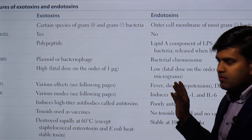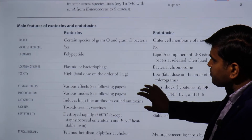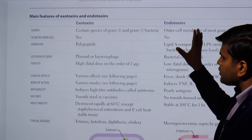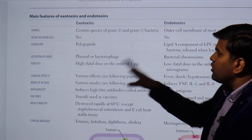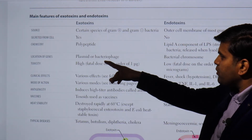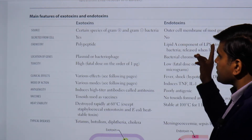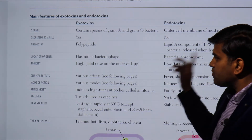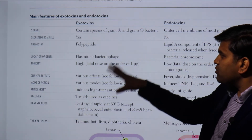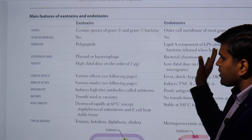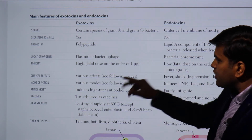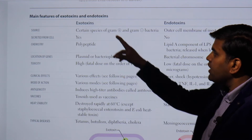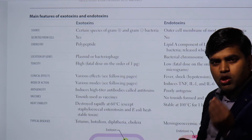Chemically, exotoxin is a protein whereas endotoxin is a lipopolysaccharide — the lipid A being the toxic component — along with carbohydrates and polysaccharide. The gene location for exotoxin is on a plasmid, whereas for endotoxin it is on the bacterial chromosome.